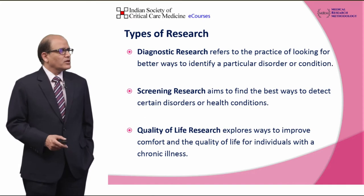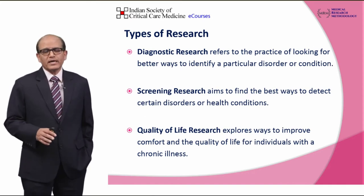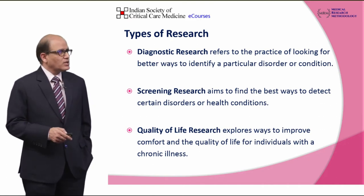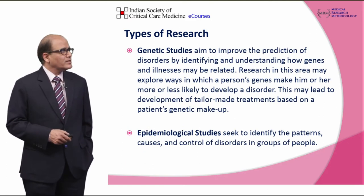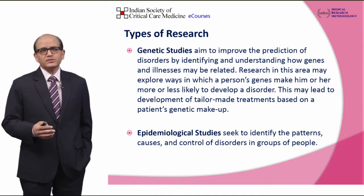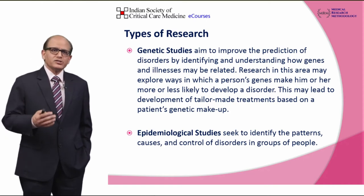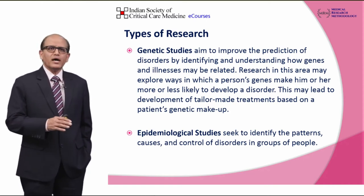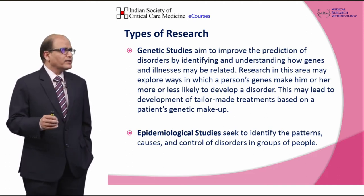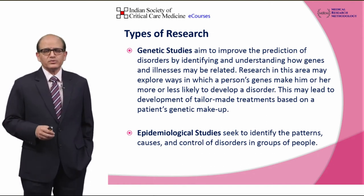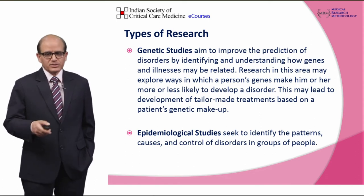We could also do quality of life research for patients suffering from chronic illnesses — how can we make their lives better? We could do genetic studies, looking at genetic predisposition to certain medical diseases and finding customized therapy to help the patient. We could also do large-scale epidemiological studies, trying to identify the causes, patterns, and control of disorders in a group of people, which may provide baseline data for further research.